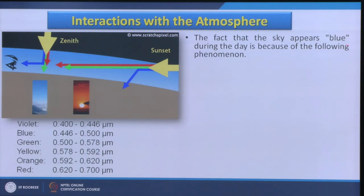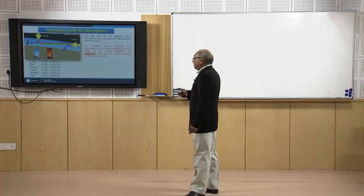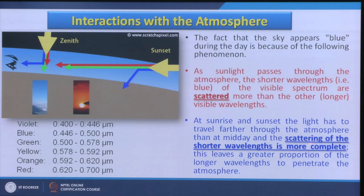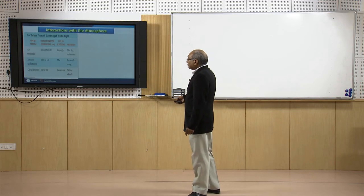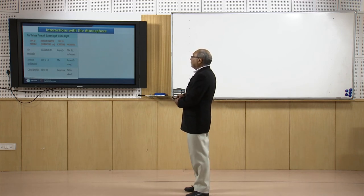The reason why the sky appears blue during the day is because when sunlight passes through the atmosphere, the shorter wavelengths — specifically the blue part of the visible spectrum — are scattered more than longer visible wavelengths. Therefore we generally see our sky as blue. At sunrise and sunset, light has to travel a much longer distance through the atmosphere; scattering of shorter wavelengths is more complete, leaving a greater portion of longer wavelengths to penetrate, producing red and orange colors.